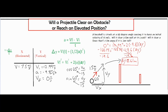For the second part, we want to figure out whether it clears a fence that's 17 meters away if it's 2 meters tall. We erase the VF = 0 value because it no longer applies — the ball is now falling and gaining vertical velocity. We keep the initial conditions. The 17 meters is our delta x, and that's the additional information we're given.